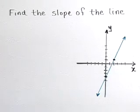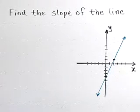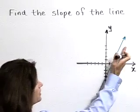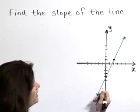Find the slope of the line pictured in this graph. Well, as we look at the line, we can see that it's going to have a positive slope. As we read it from left to right, it increases.